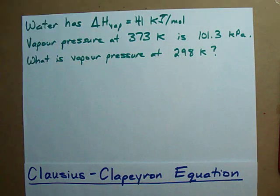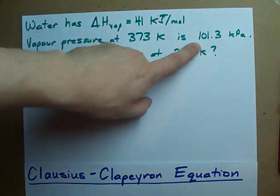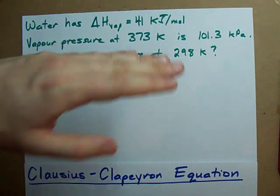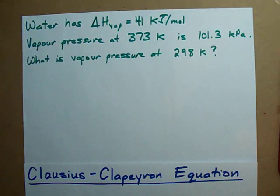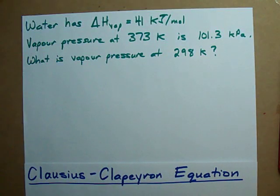If you're given an enthalpy of vaporization and the vapor pressure of a substance at a certain temperature, you can predict the vapor pressure at any other temperature you want. This is the most common type of question a teacher will give when they're trying to test you about the Clausius-Clapeyron equation.